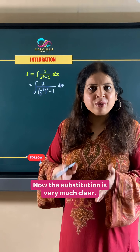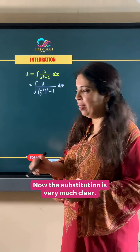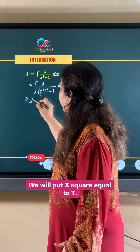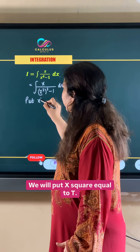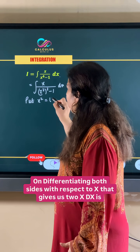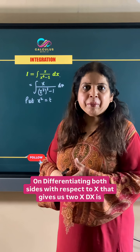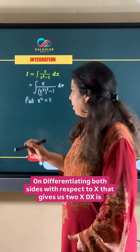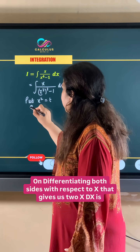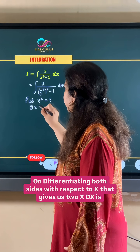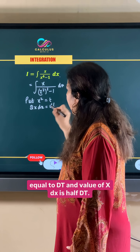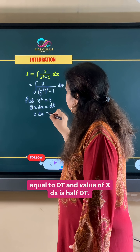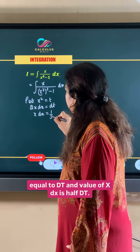Now the substitution is very much clear. We will put x square equal to t. On differentiating both sides with respect to x, that gives us 2x dx equal to dt, and the value of x dx is half dt.